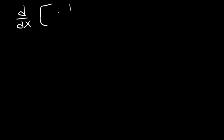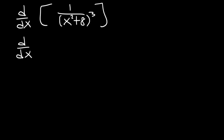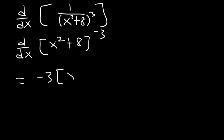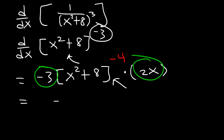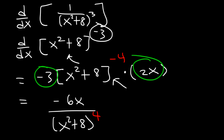Find the derivative of 1 divided by x squared plus 8 raised to the 3rd power. First, let's rewrite the expression — bring the variables to the top, so this is x squared plus 8 raised to the minus 3. Now we can use the chain rule combined with the power rule. Move the negative 3 to the front, keep the inside function the same, and subtract by 1: negative 3 minus 1 is negative 4. Multiply by the derivative of the inside function, which is 2x. Moving this back to the bottom gives negative 6x on top and x squared plus 8 raised to the 4th power on the bottom. For some examples, you need to rewrite before finding the derivative.